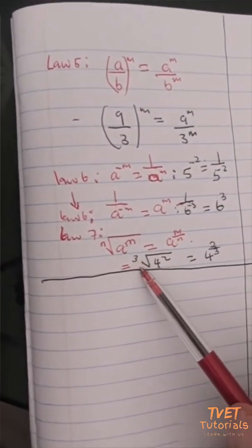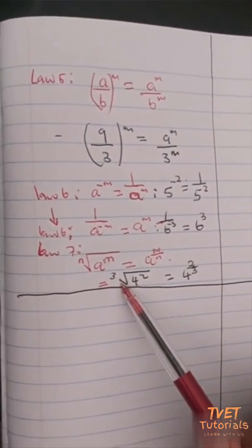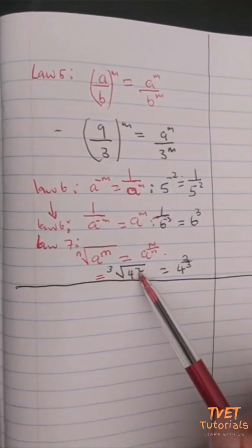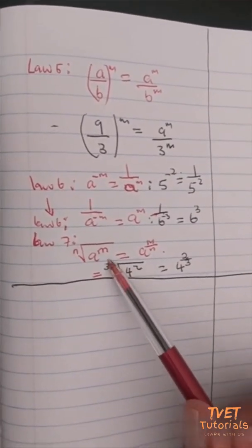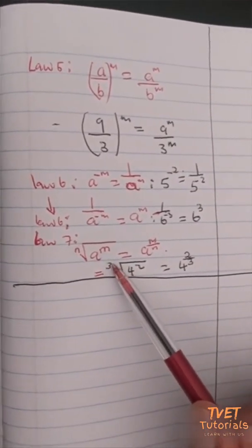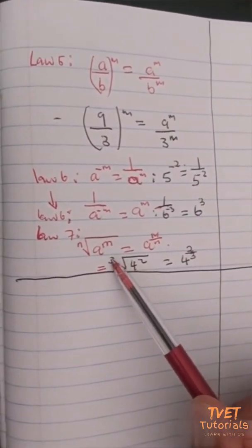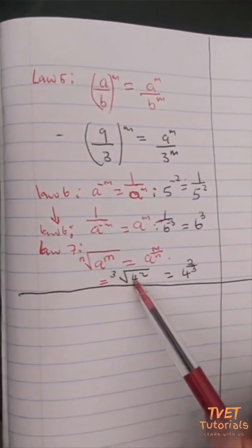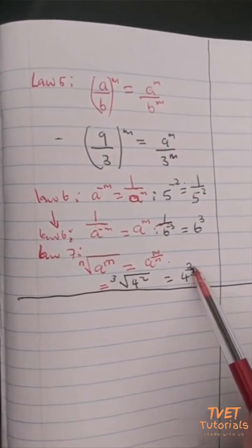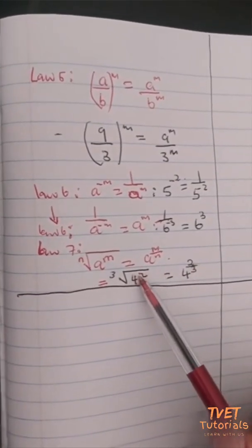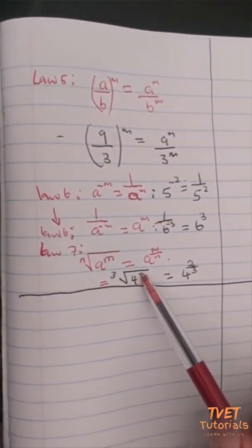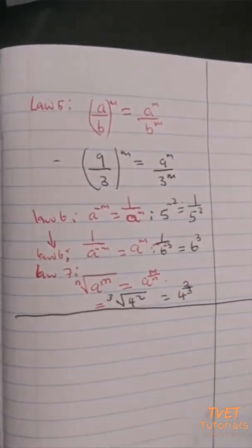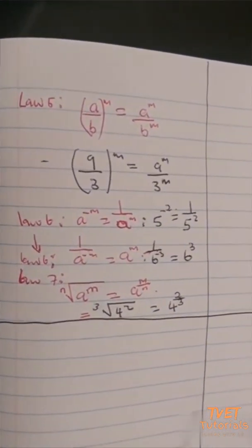Looking at this in terms of numbers: if I have four raised to the power two, under the cube root (the third root), I can represent that as four — which is my base — raised to the power two divided by three. You always start with m on top, divided by n.